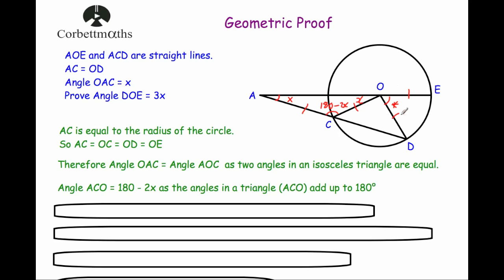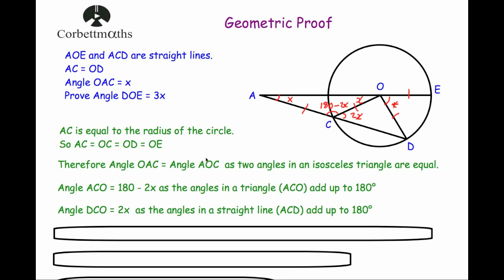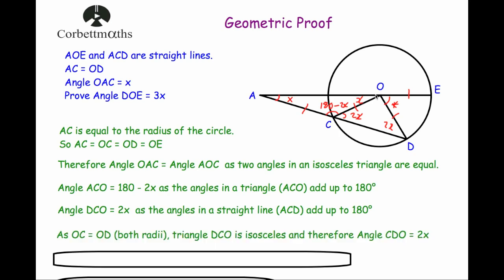Now I want to find angle DOE. I'll consider the straight line and find the angle inside triangle OCD. Since angle ACO is 180 degrees minus 2x, and angles on a straight line add up to 180 degrees, angle DCO must equal 2x. So angle DCO equals 2x as the angles in straight line ACD add up to 180 degrees. We've also got another isosceles triangle here — since OC equals OD as radii, triangle DCO is isosceles, so angle CDO is also equal to 2x.